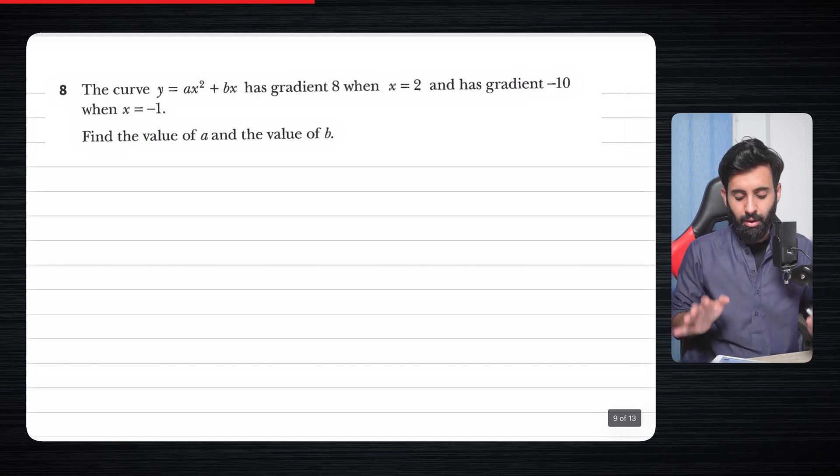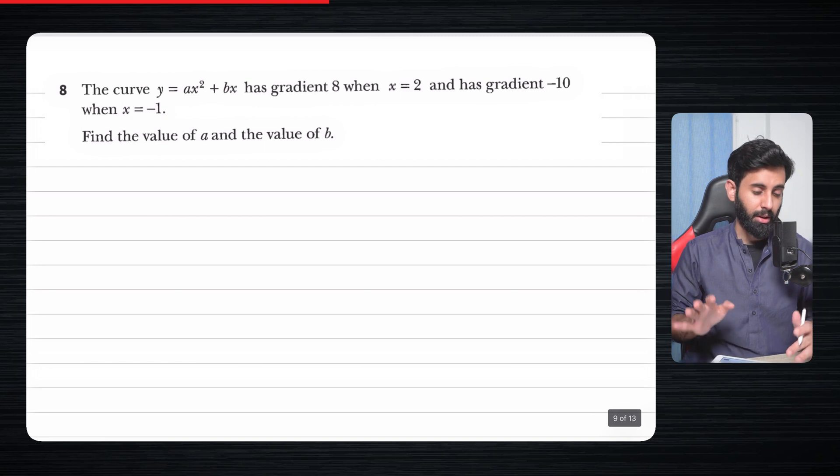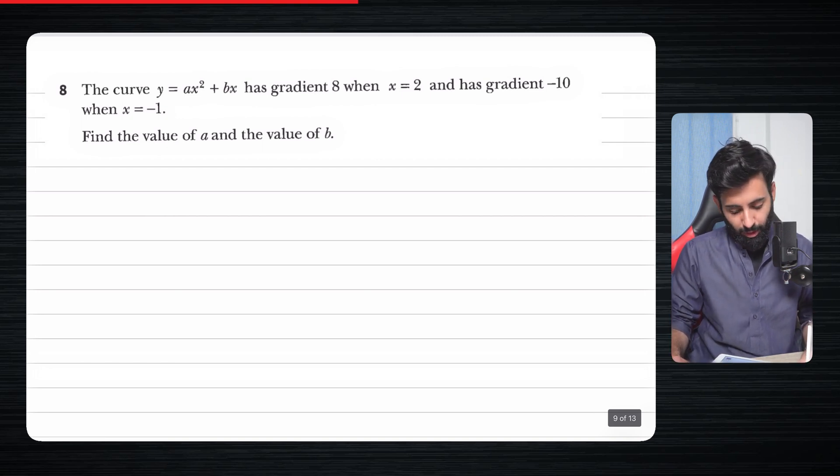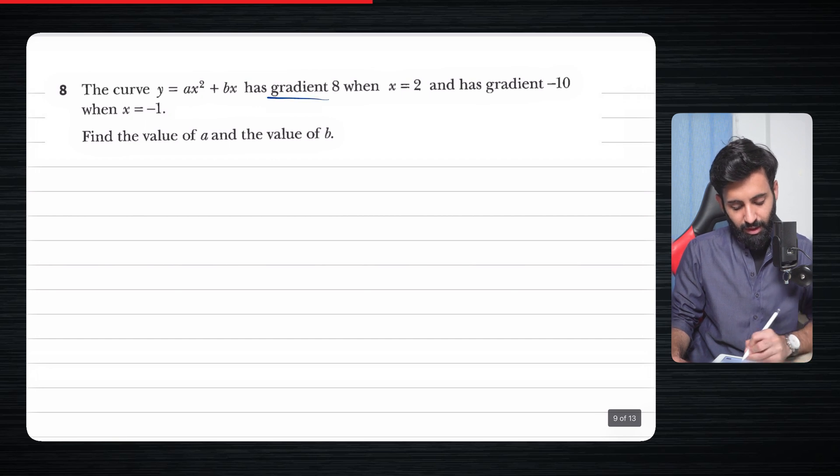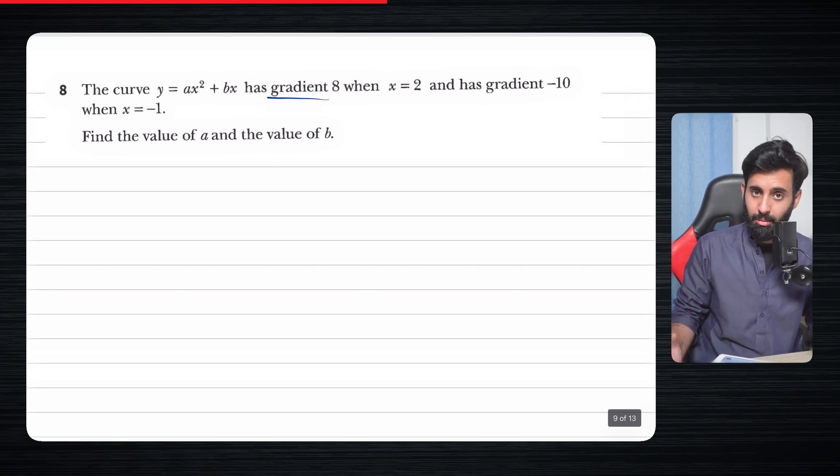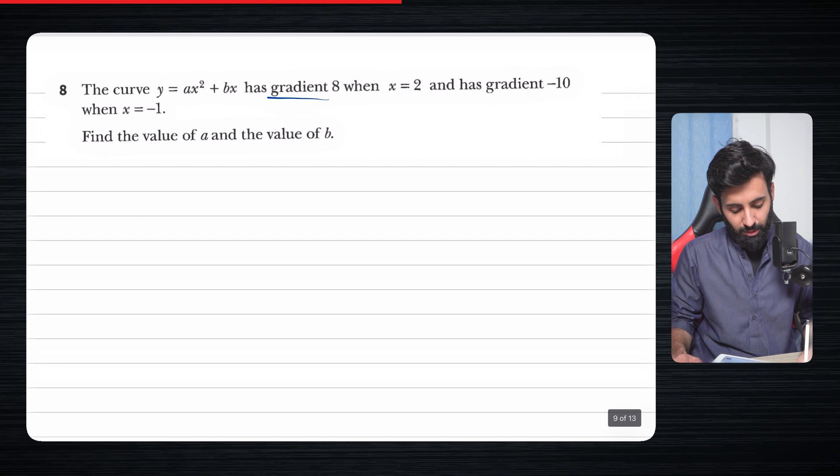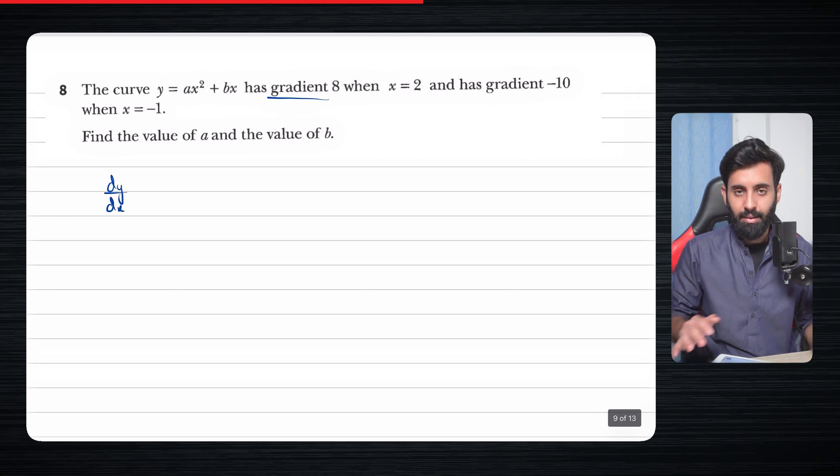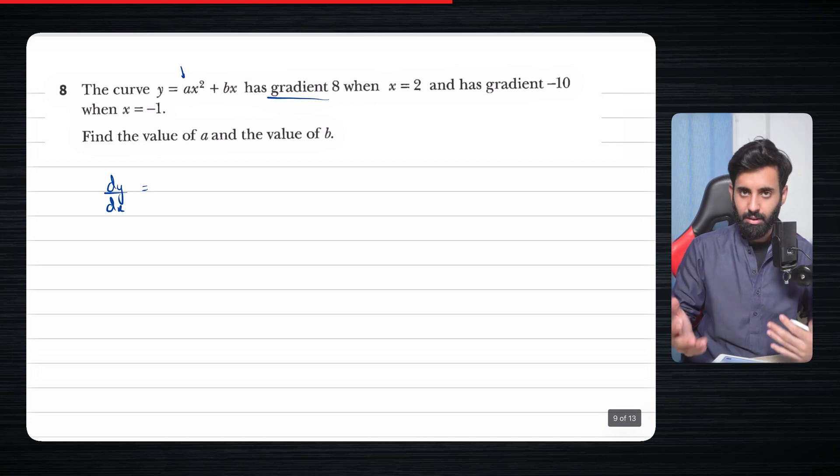So I'm looking for two equations which we're going to solve simultaneously to find the value of a and b. Notice that the question is talking about the gradient here, so that means it's talking about dy/dx. The first thing I want to do before I can plug anything in the equation is differentiate it. We're going to treat a and b as just two constants.